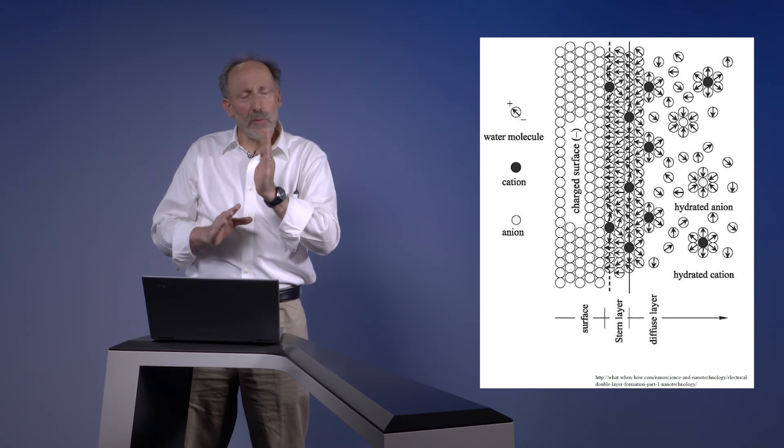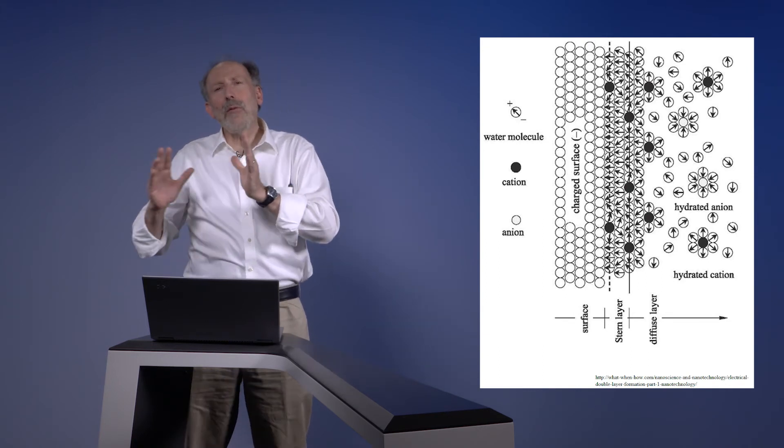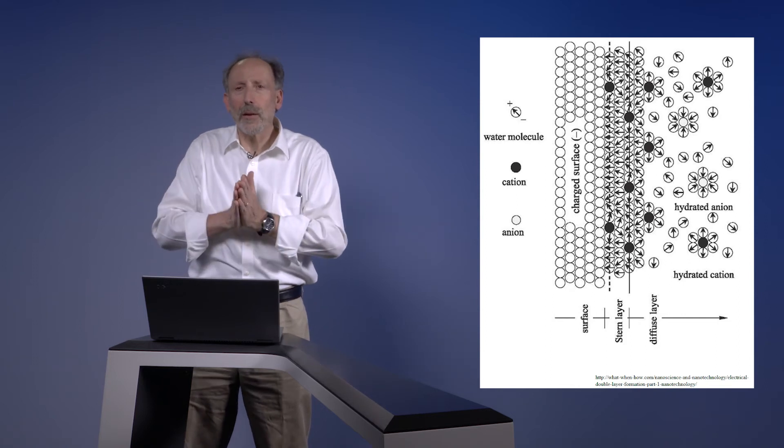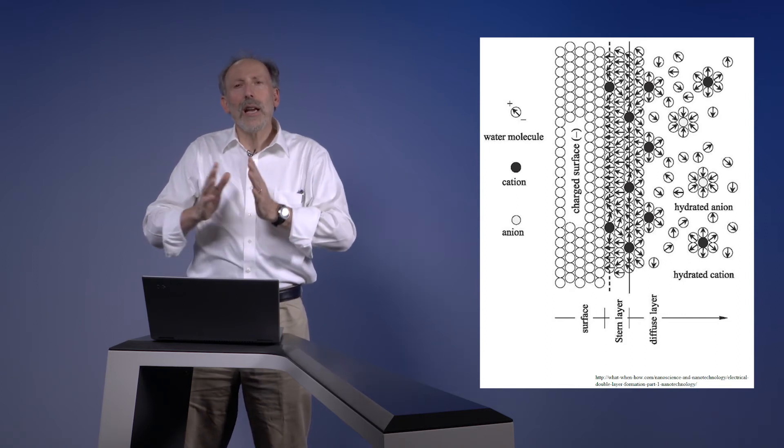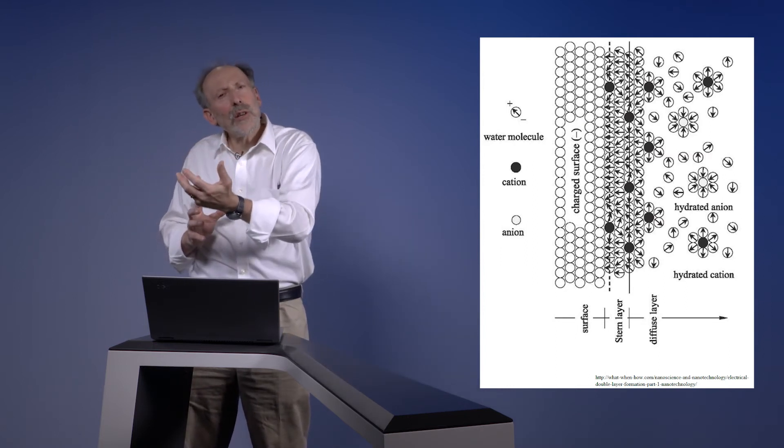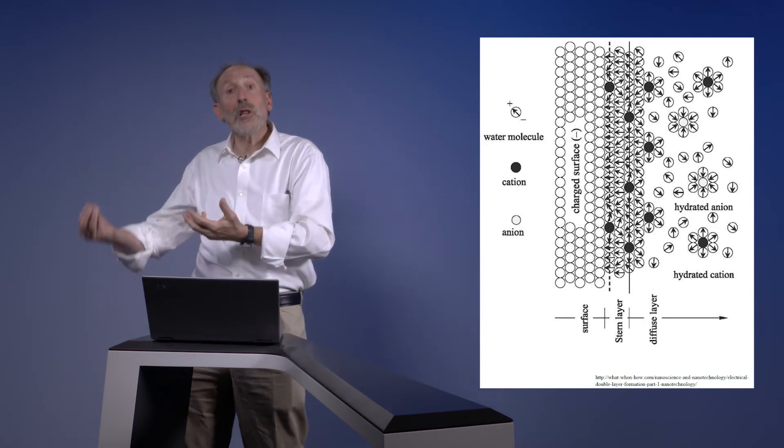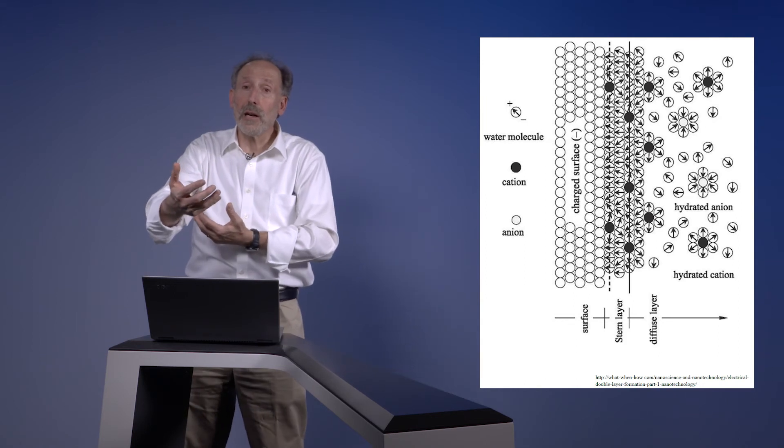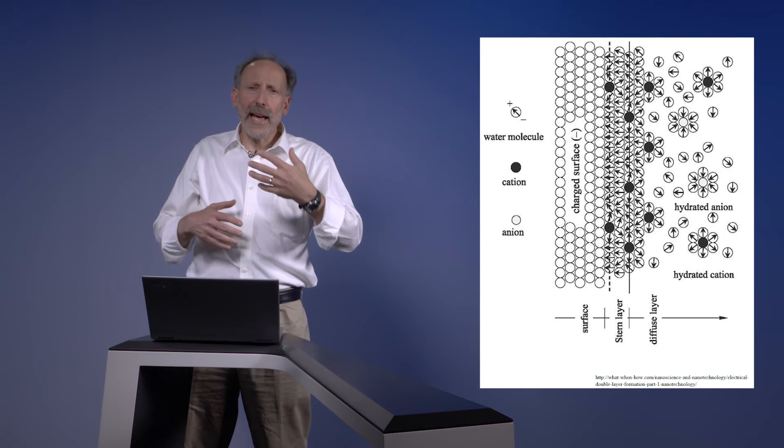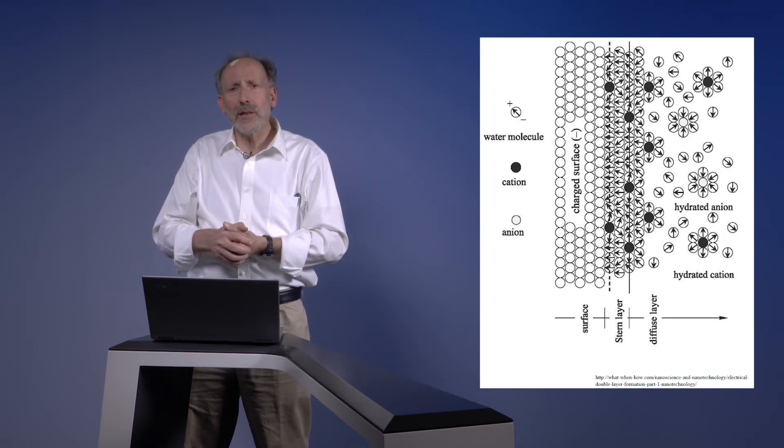So we have the Stern layer of the bound particles. And then we have what we might call the Gouy layer, G-U-O-Y, for the person who described it first. Which is an area where there's an enhanced concentration of cations, but an associated diffusive content of anions. So cation rich, anions still present.